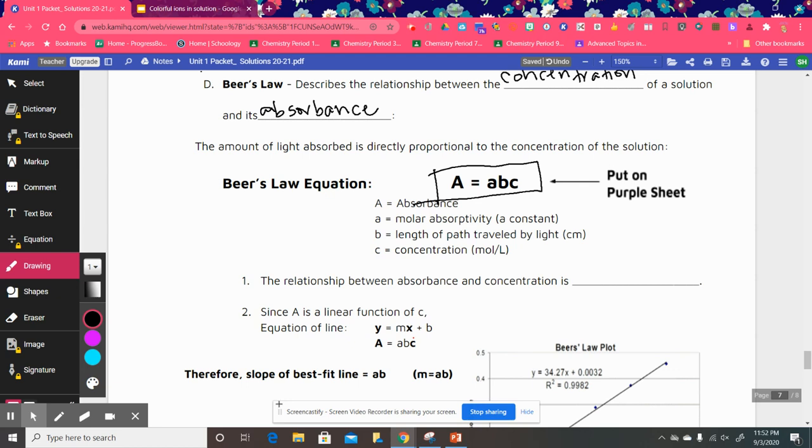B is the length of the path that's traveled by the light as it passes through the sample. That's in centimeters. And then C is for concentration. The lowercase c is for concentration in this formula. And that is moles per liter.